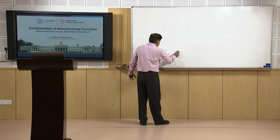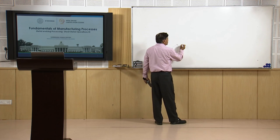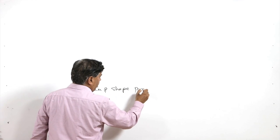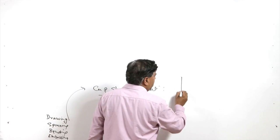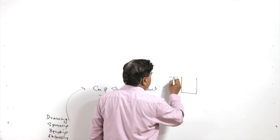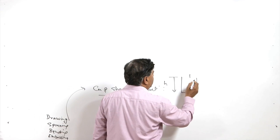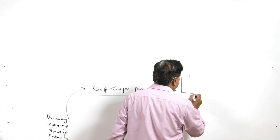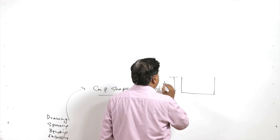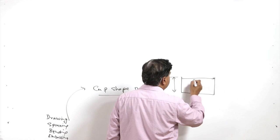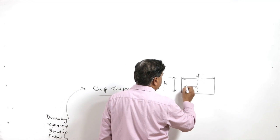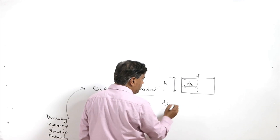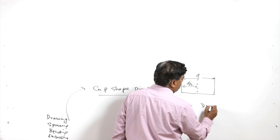Coming to another sheet metal process called drawing. Drawing is basically used for making cup-shaped products, especially where the height of the cup h and the diameter d satisfy the condition: if d/2 is greater than h, then it is called the drawing process.